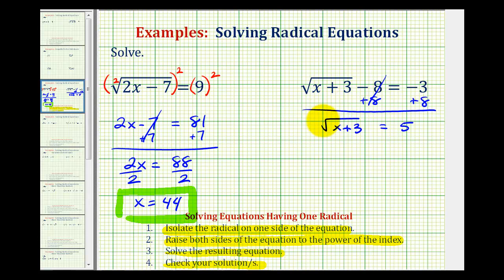And again, because we have a square root and the index is 2, we're going to square both sides of the equation. The square root of the quantity x plus 3 squared will just be x plus 3. 5 squared is equal to 25.